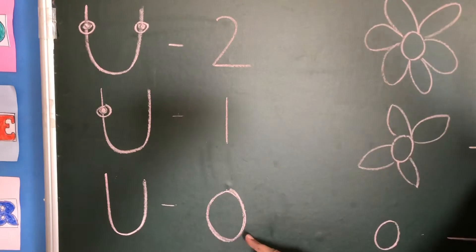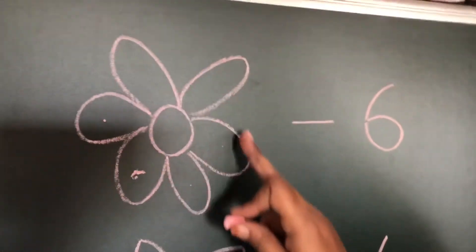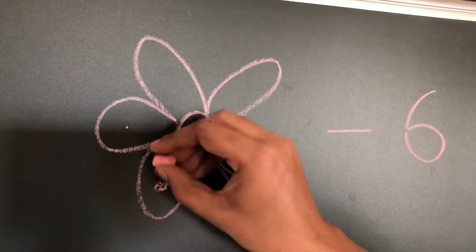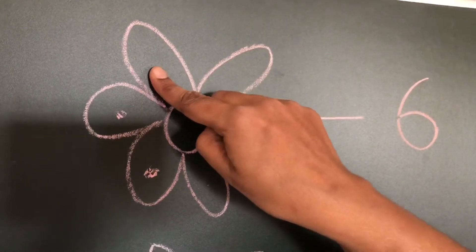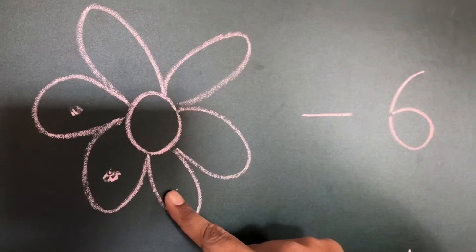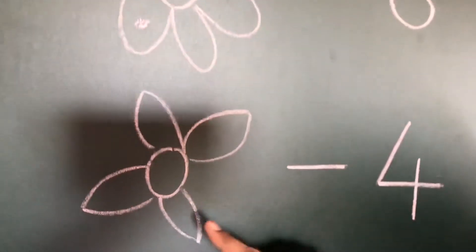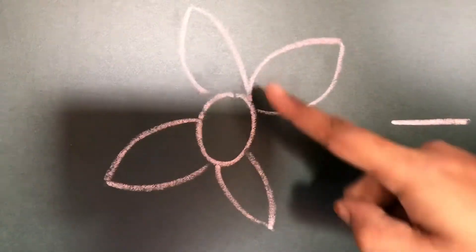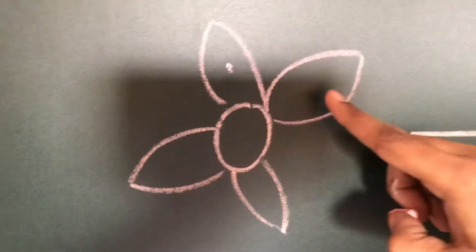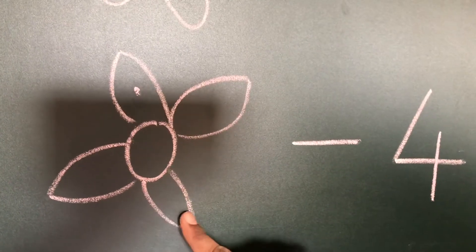Now I'm going to count the petals in this flower. I'll start: one, two, three, four, five, and six. How many petals are there in this flower? Six. Now next — I'll count again. See how many petals: one, two, three, four. It has four petals in this flower.